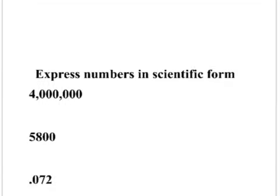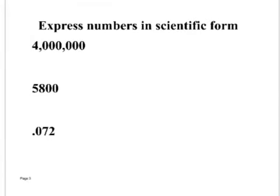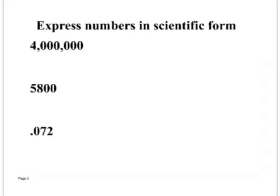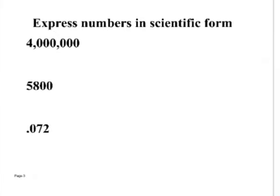Now, they give us a number in standard form where we write it in scientific notation. Four million, I write the decimal behind the first significant number. What is the first significant number up here? Four. So I don't need to write 4.0. I can just leave it as four.